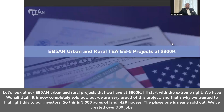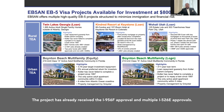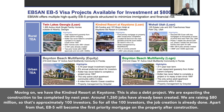Let's look at EB5AN's urban and rural projects at the $800K level. Starting with Ohali Yuta — it is now completely sold out, but we're very proud of this project. It spans 5,000 acres of land with 428 houses. Phase one is nearly sold out, and we've created over 700 jobs. The project has already received the I-956F approval and multiple I-526E approvals. Next, we have the Kindred Resort at Keystone, a debt project where construction is expected to be completed next year. Around 1,260 jobs have already been created; we're raising $80 million — approximately 100 investors — and the job creation is already done for all 100 investors. EB5 will become the first priority mortgage on the property after construction.